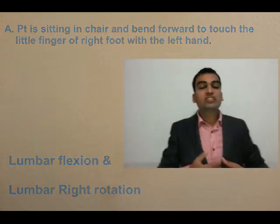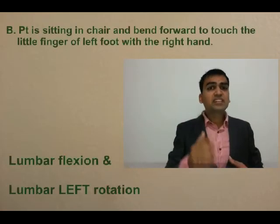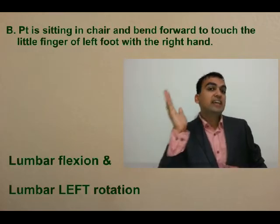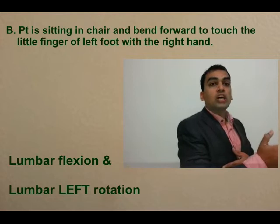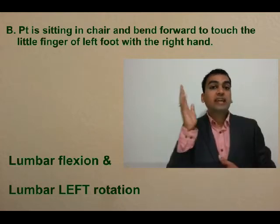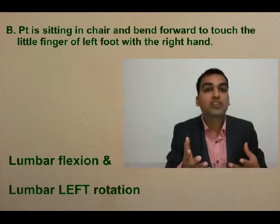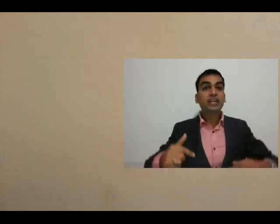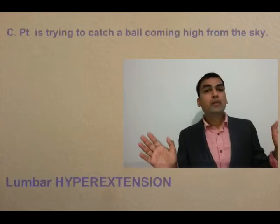The second activity is similar, but this time the right hand is going towards the left leg's toe. So this time there is left rotation of the lumbar vertebrae along with flexion of the lumbar vertebrae.